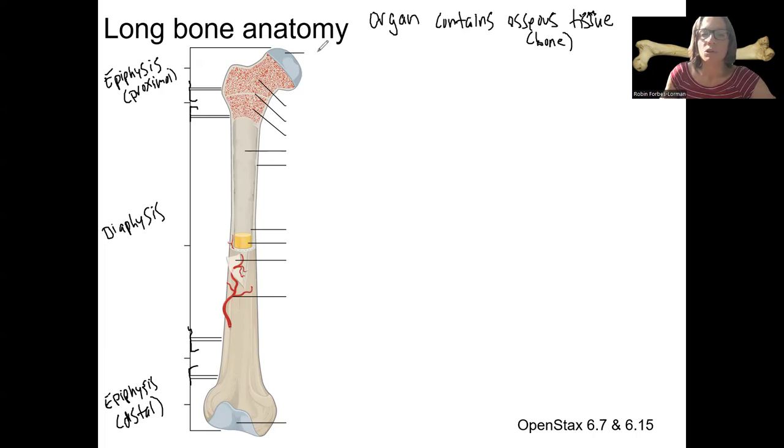Let's just start at the top here. So in addition to osseous tissue, we're going to have other tissue types as well. Right here, one of them is shown. This is articular cartilage. Made from what type of cartilage? Hyaline. Right? Articular cartilage is always hyaline cartilage.